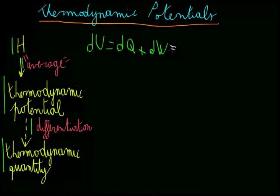According to the second law of thermodynamics, if the transformation is reversible, we can write dQ as the product between the system's entropy, S, and the variation in temperature, dT. Furthermore, if our system is a gas, then dW can be written as minus pdV, where p is the pressure and V is the volume.